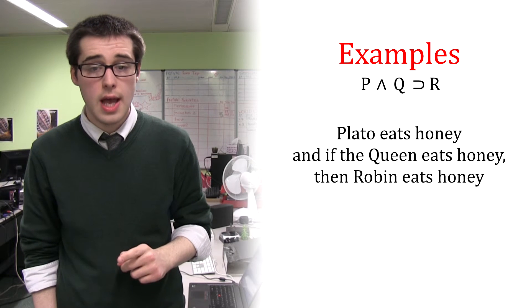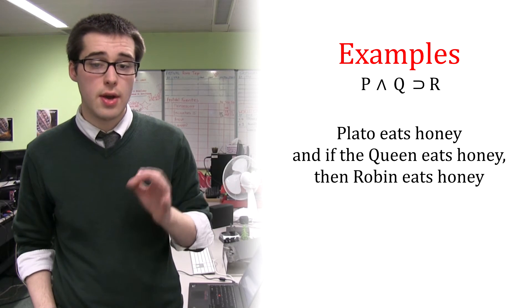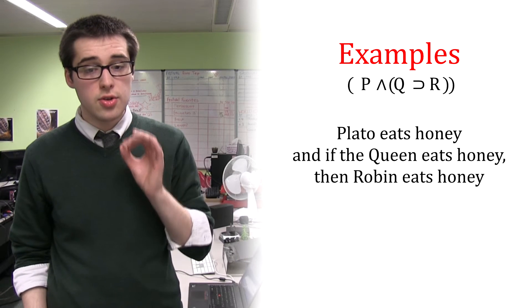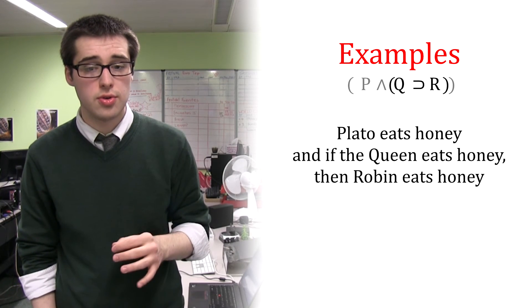However, the sentence, Plato eats honey and if the Queen eats honey, then Robin eats honey, is a conjunction where the second conjunct is a conditional, and would be written with these brackets.